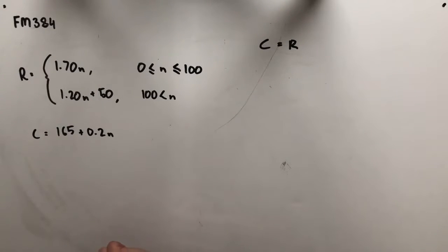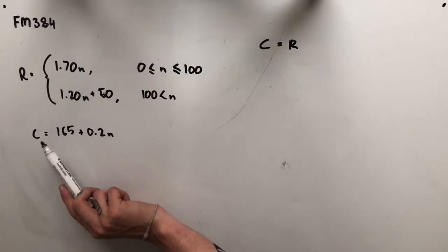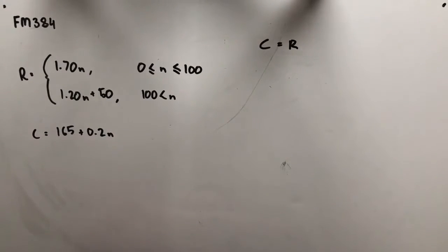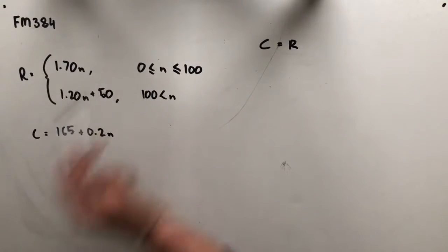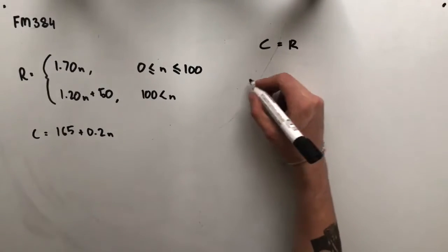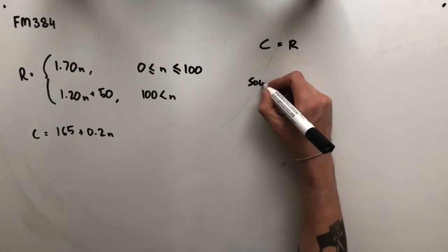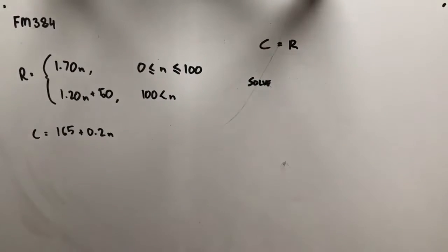So what we're going to do is compare our cost and revenue equations. We're going to use the solve function to do this because it can make it much quicker. We're going to try and find a number of rolls that make sense given the equation that we use. So first we're going to look at this first revenue equation, this 1.70N.